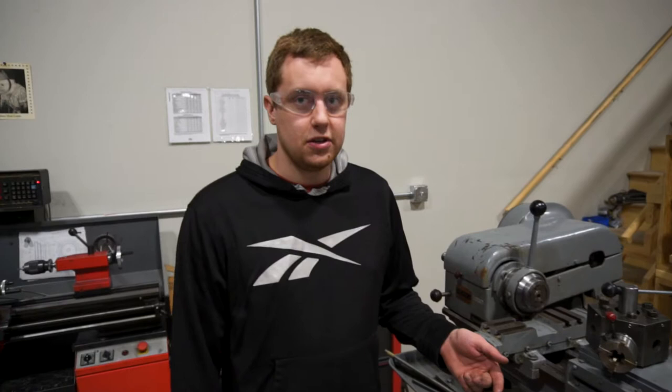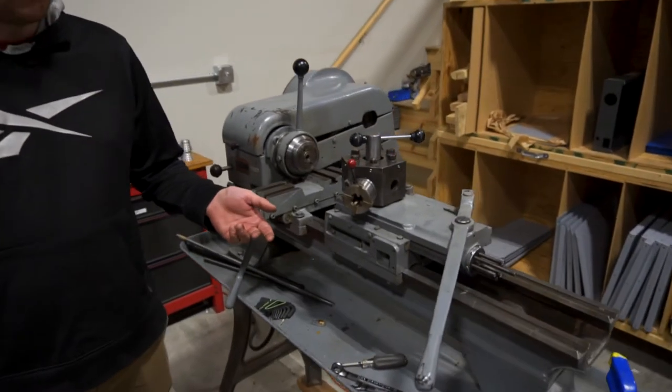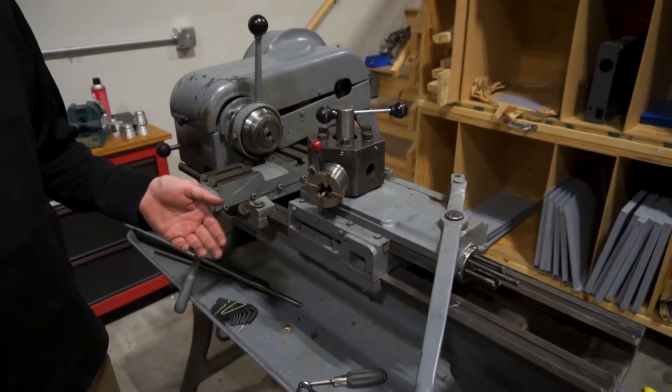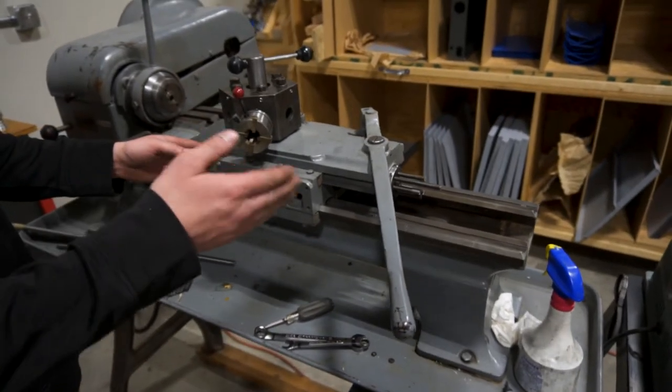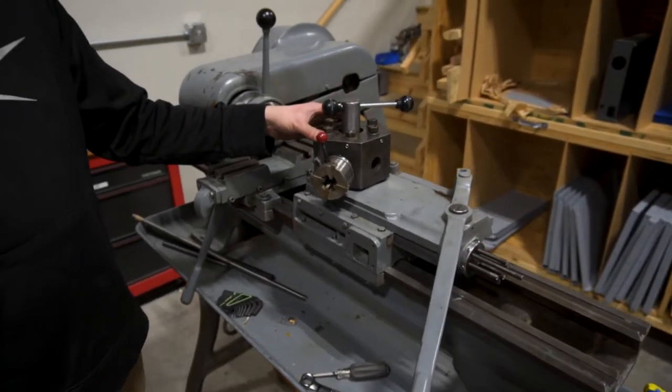Today we're working on a 1950s Logan lathe that Larry picked up out of a barn within the last year or so. This is currently set up to be a turret lathe where this mechanism up top here is able to travel forward and back for each operation and this turret will spin. We'll see that in a minute.